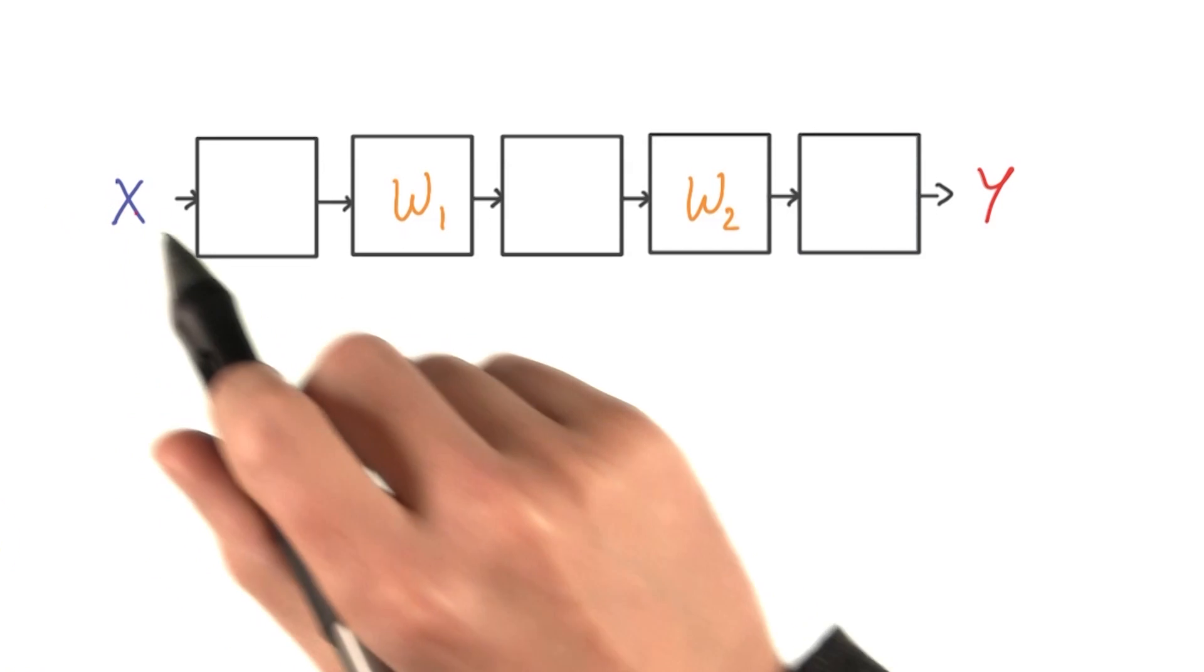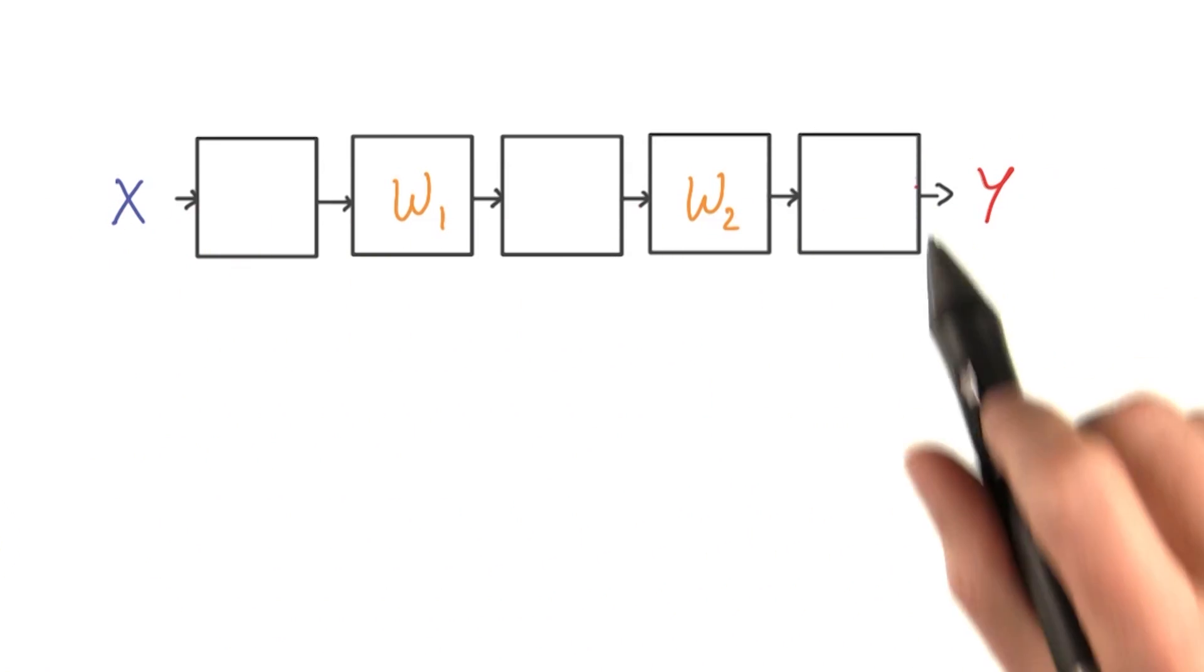When you apply your data to some input x, you have data flowing through the stack up to your predictions y.